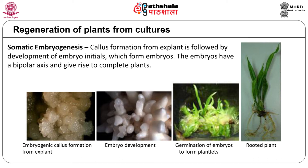Embryogenic calli are a good starting material for plant transformation, since selection of transformed embryos often shows uniformly transformed plants. On the other hand, calli that differentiate into shoot buds may often give rise to chimeric shoots which require additional selection procedures.